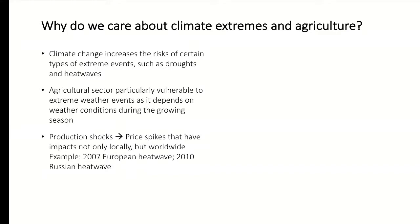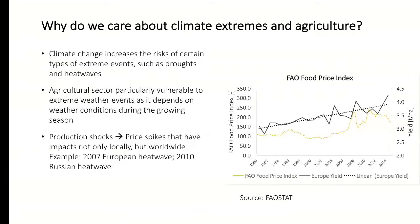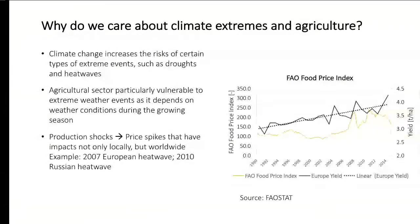Price spikes can lead to people not being able to afford food. For example, in 2007 the European heat wave and in 2010 a Russian heat wave led to price spikes felt internationally. We can see the timeline of the food price index by the United Nations, and you can see price spikes corresponding to periods of below-average wheat yields just before them. These harvest failures result in food insecurity and have international consequences.